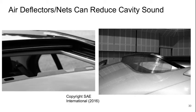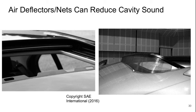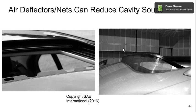One way to deal with this problem is to install air deflectors or nets at the openings of the sunroof. You see this on most modern vehicles in one form or another — little dips that break up the vortex shedding, or a net that forces vortex shedding to occur over much smaller scales. Obviously, this kind of thing adds drag.